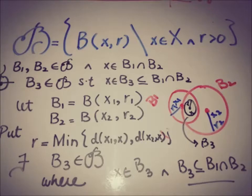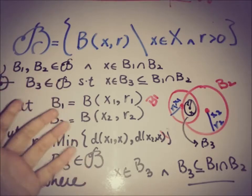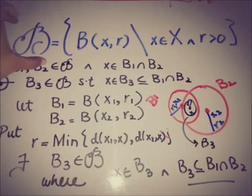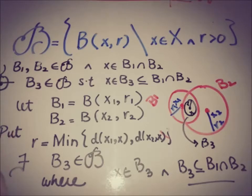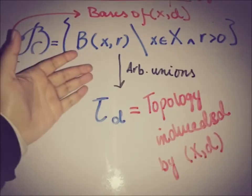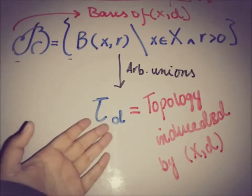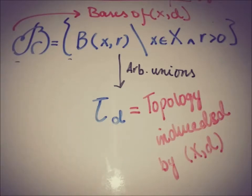Now we can talk about how to form a topology using a metric space. The answer is that we form topology using the basis: by taking arbitrary unions of the open balls in this collection, we form sets that constitute a topology. This collection of open balls is a basis of the metric space, and by taking arbitrary unions we form τ_d — the topology induced by the metric space. Thanks for watching; subscribe for more upcoming videos. Take care, goodbye.